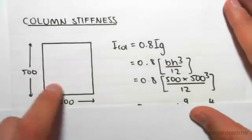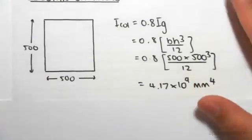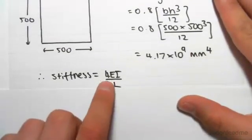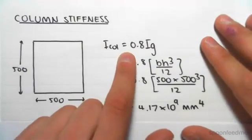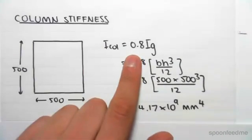Our column is a 500 by 500 millimeter column. We eventually want to find the stiffness of the column, which is 4EI on L. We approximate the I value to be 0.8 times the gross I value. The reason we do this is because our column is going to crack, and it's only going to crack about a bit, so we take it as 20% is being cracked, leaving us with an actual I value of 0.8 times the gross I value.